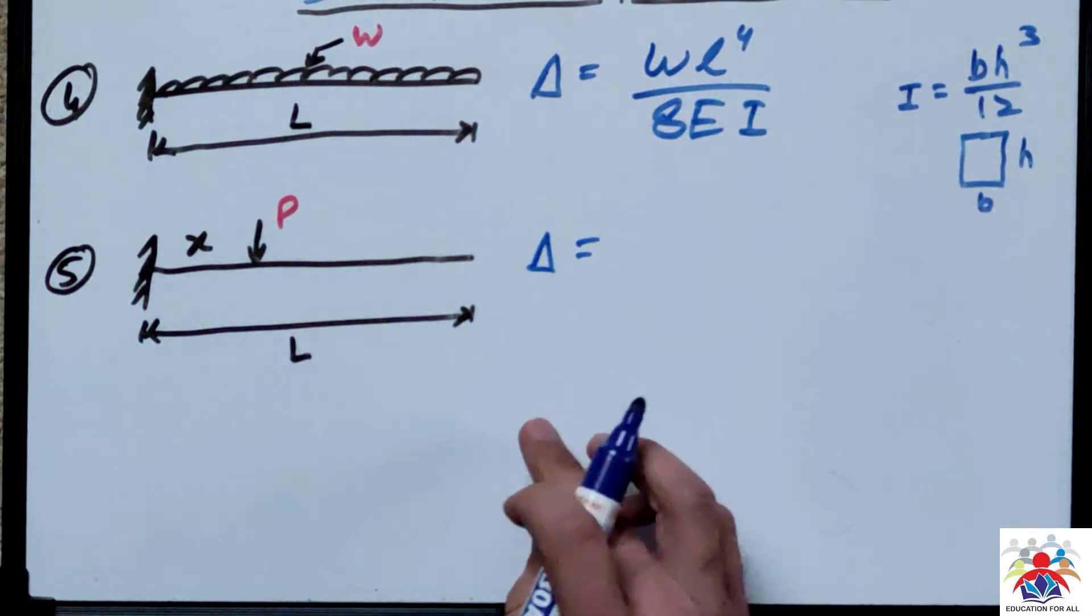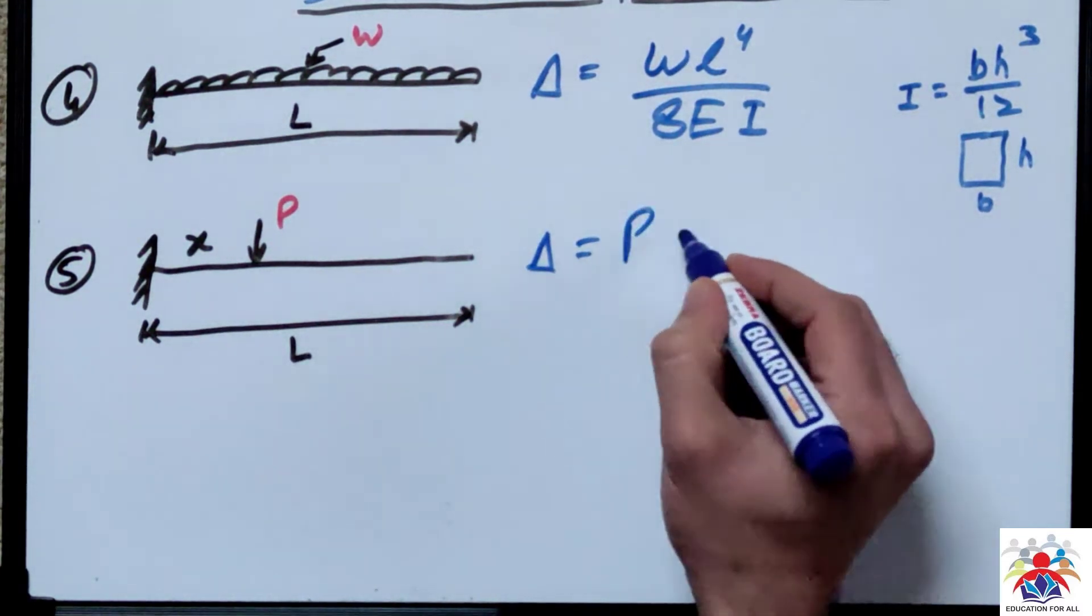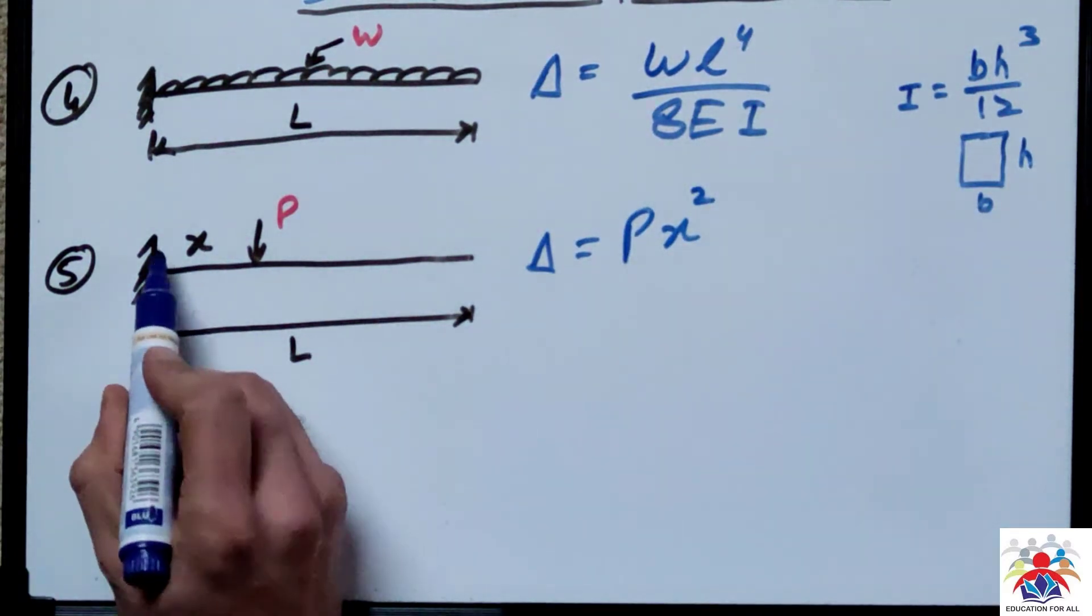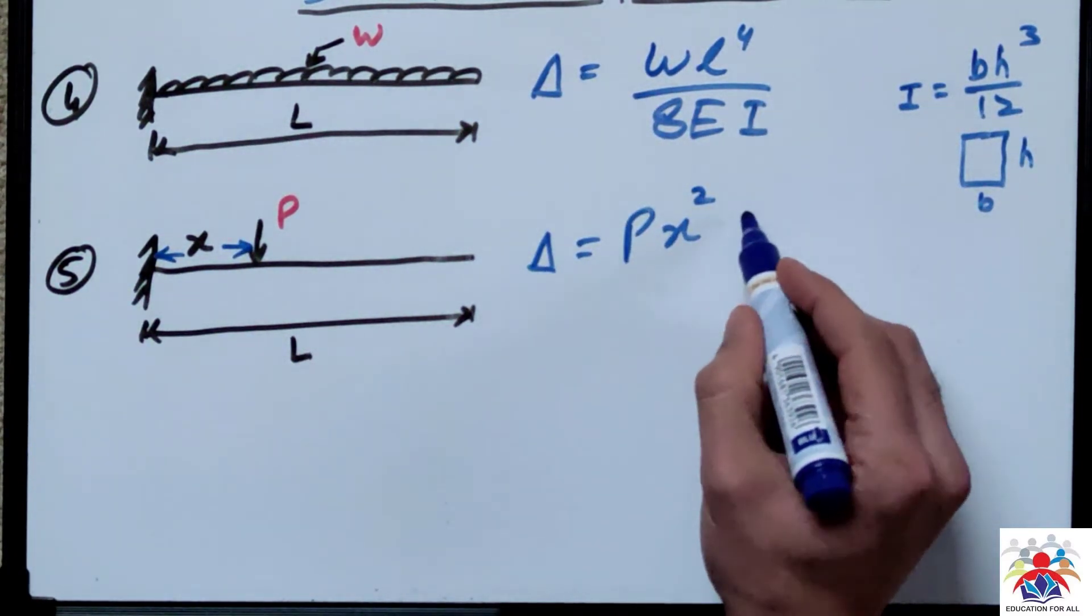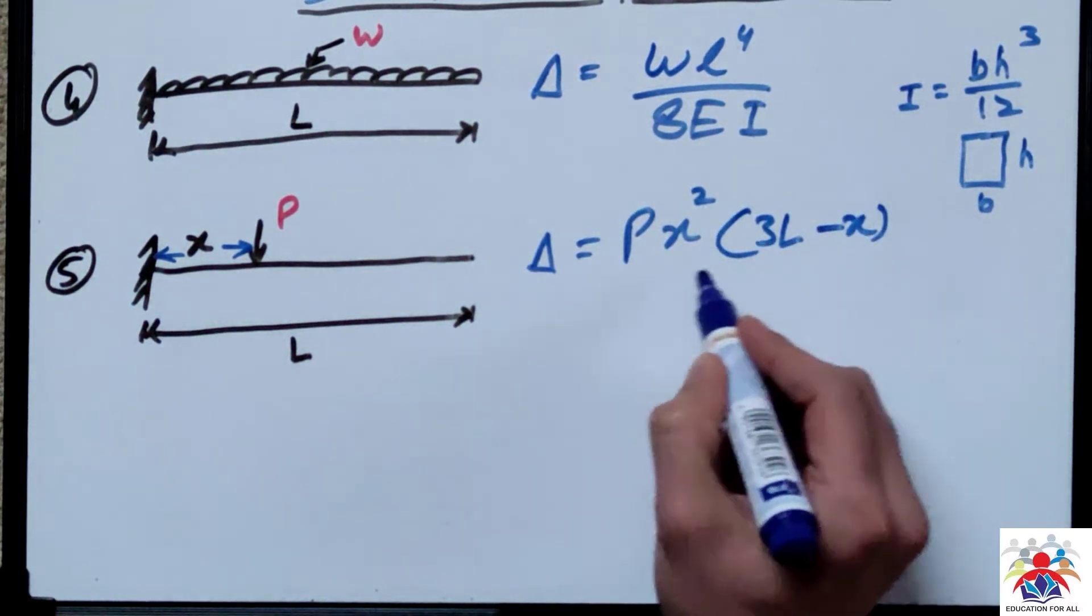P is a point load, x squared - x is any distance so it could be anything - then multiply by 3L minus that x distance, divided by 6 E I.